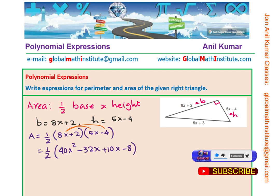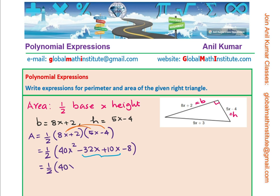We can combine the like terms which you can see here. These are the like terms since both of them have x in them. So, we have this as half of 40x squared minus 32 plus 10, so we have to take away one from the other. So, that gives us minus 22x minus 8. Multiplying by half, we get 20x squared minus 11x minus 4 unit squared as the area of the given triangle. Is that clear to you? Perfect.